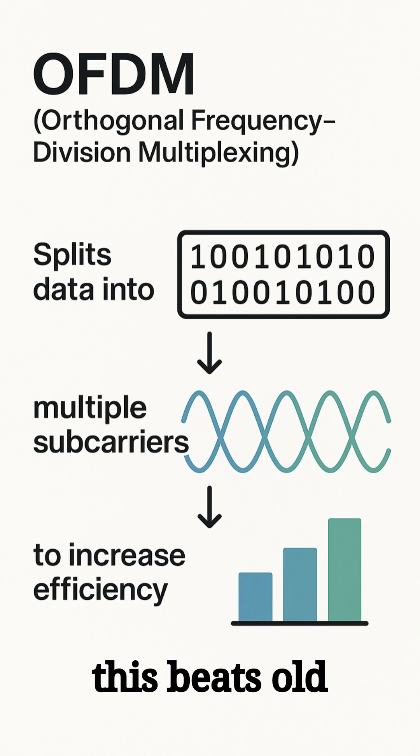Why this beats old methods. Old way, single carrier like trying to shove a whole pizza through a narrow tube, prone to errors. OFDM way, sending slices through multiple parallel tubes, faster and more reliable.